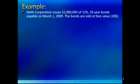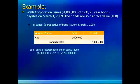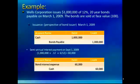Here's an example: Wells Corporation issues $1,000,000 worth of 12%, 20-year bonds payable on March 1st, 2009. Since the bonds are sold at face value — no discount, no premium — at issuance you receive $1,000,000 cash and record a bond payable of $1,000,000. To figure out the semi-annual interest payment, you take $1,000,000 times 12% times 6/12, which gives a $60,000 interest payment due every six months. Bond interest expense is debited $60,000 and cash credited $60,000 when payment is made on September 1st.